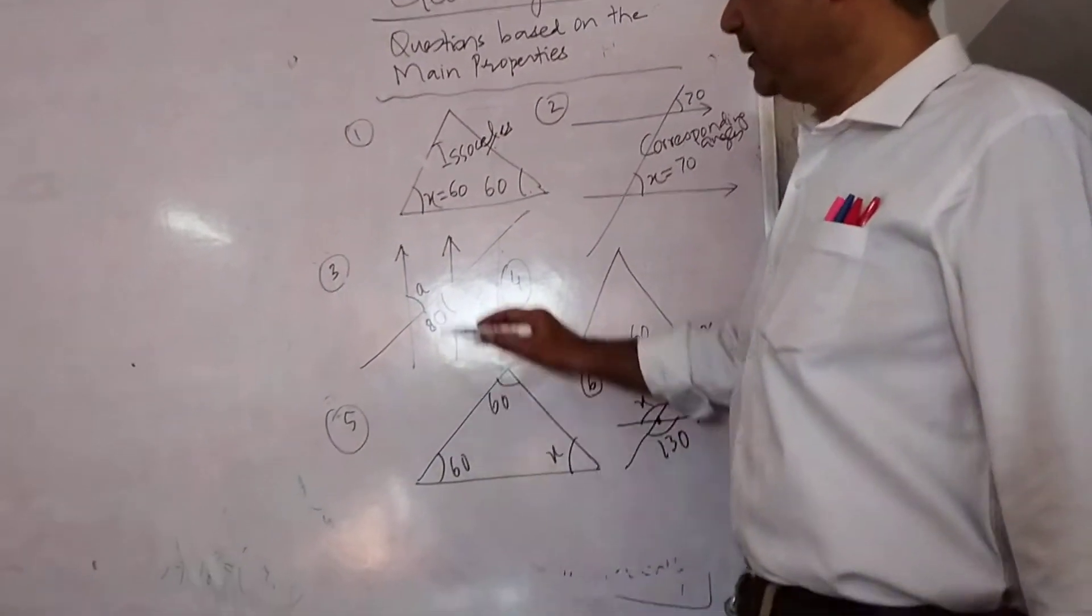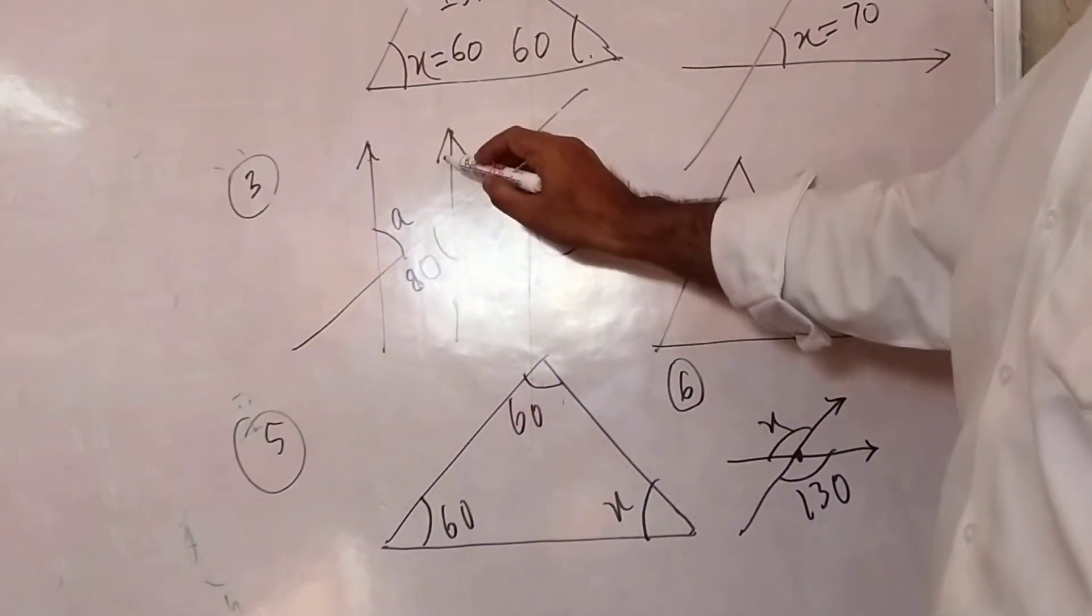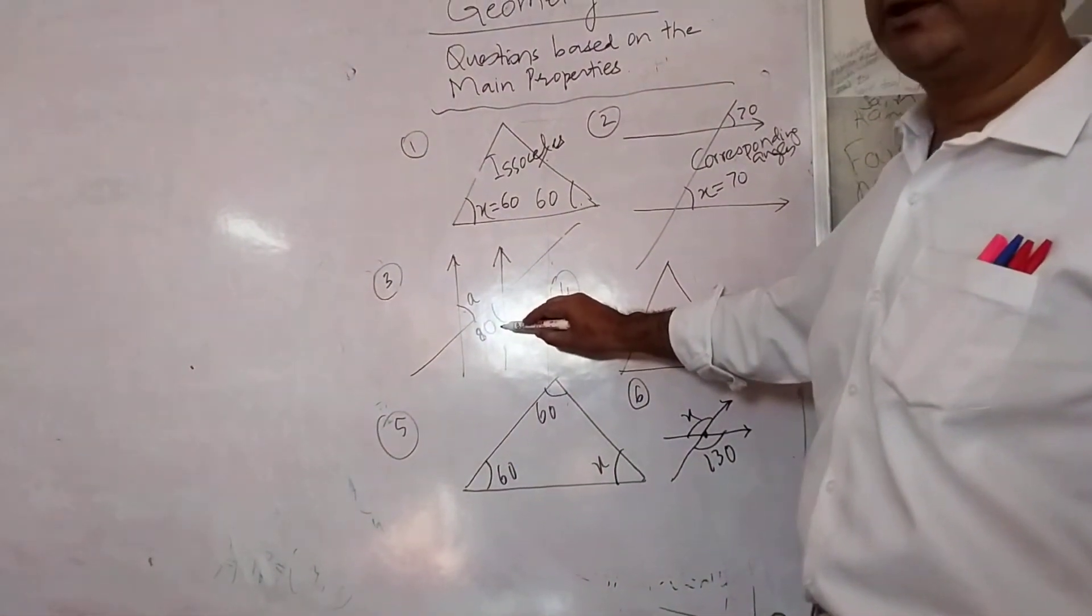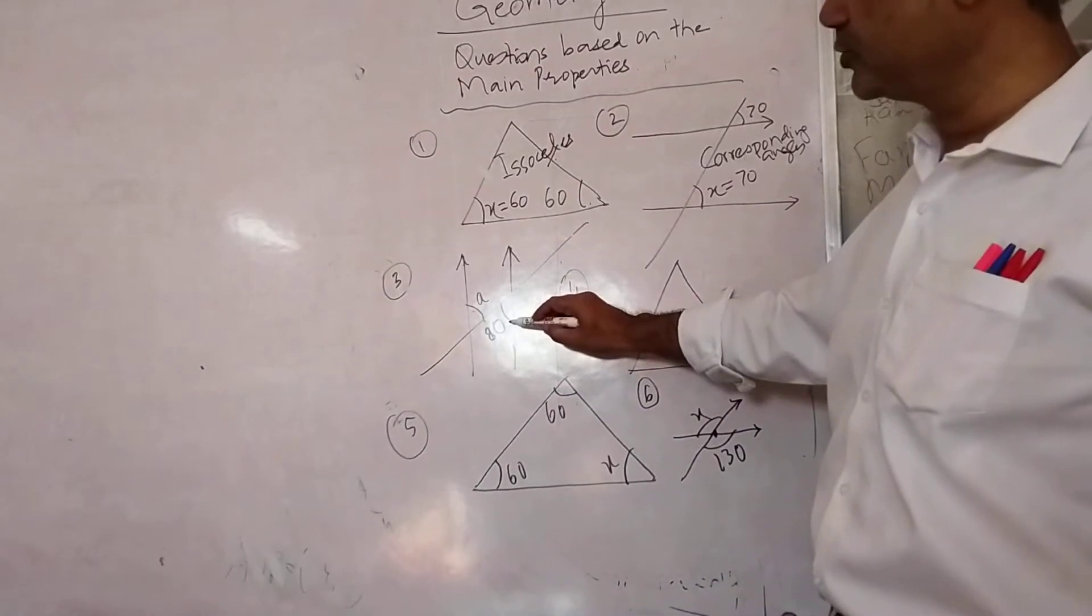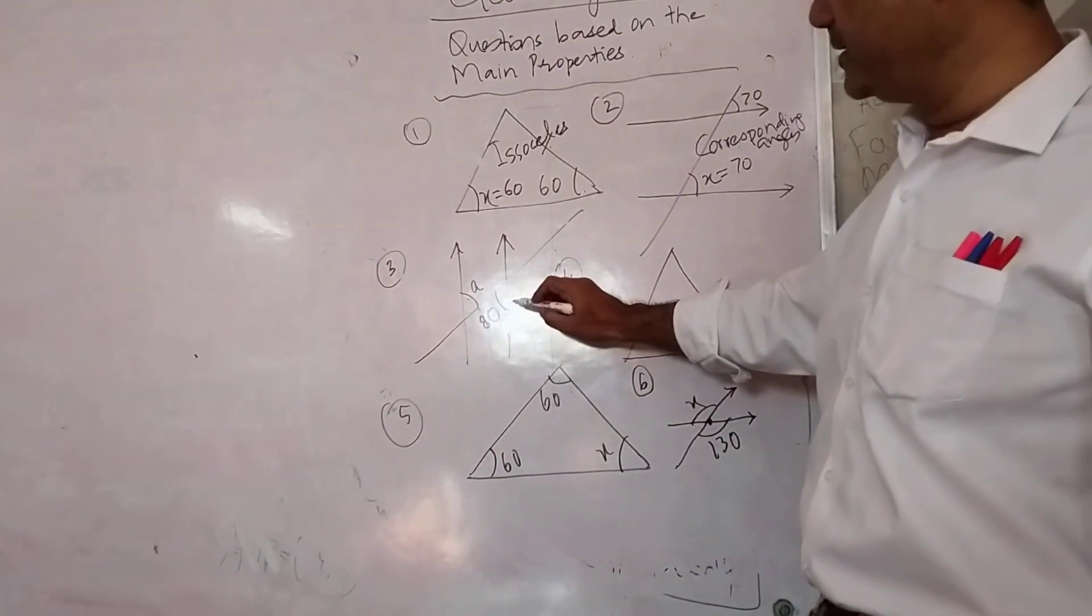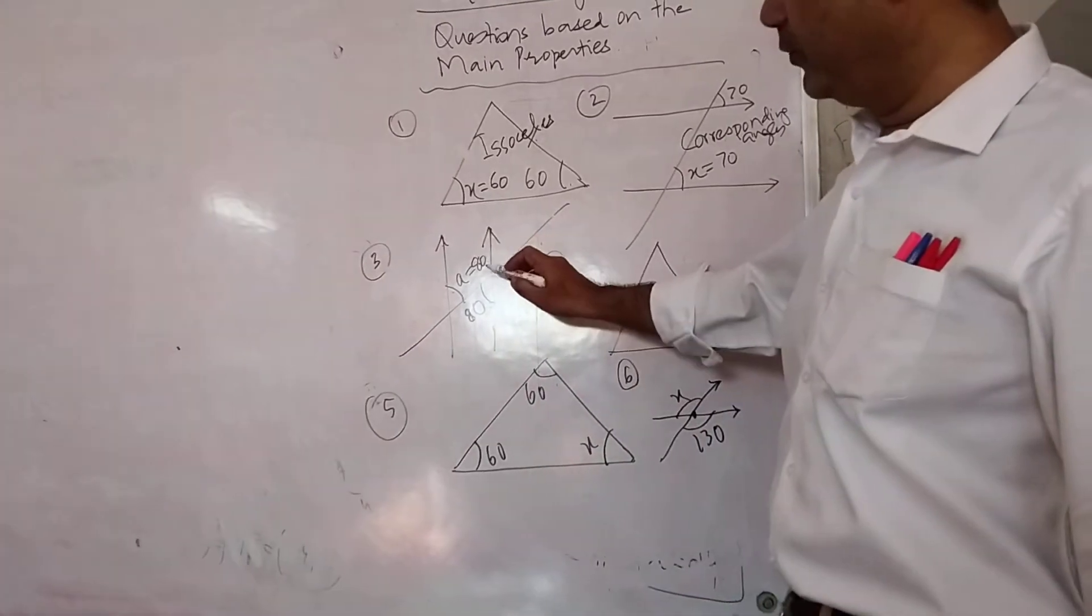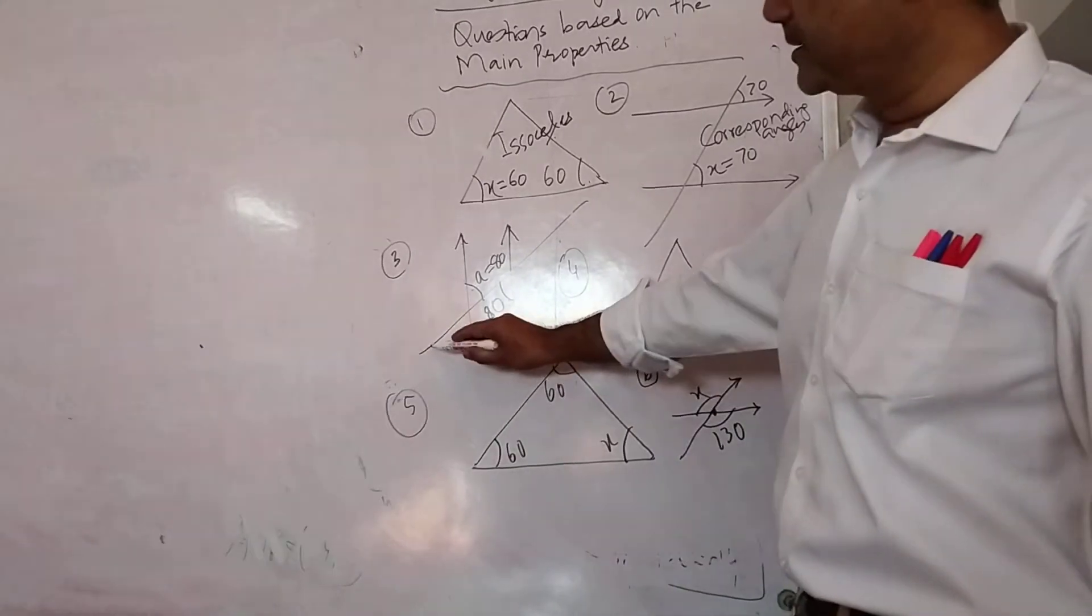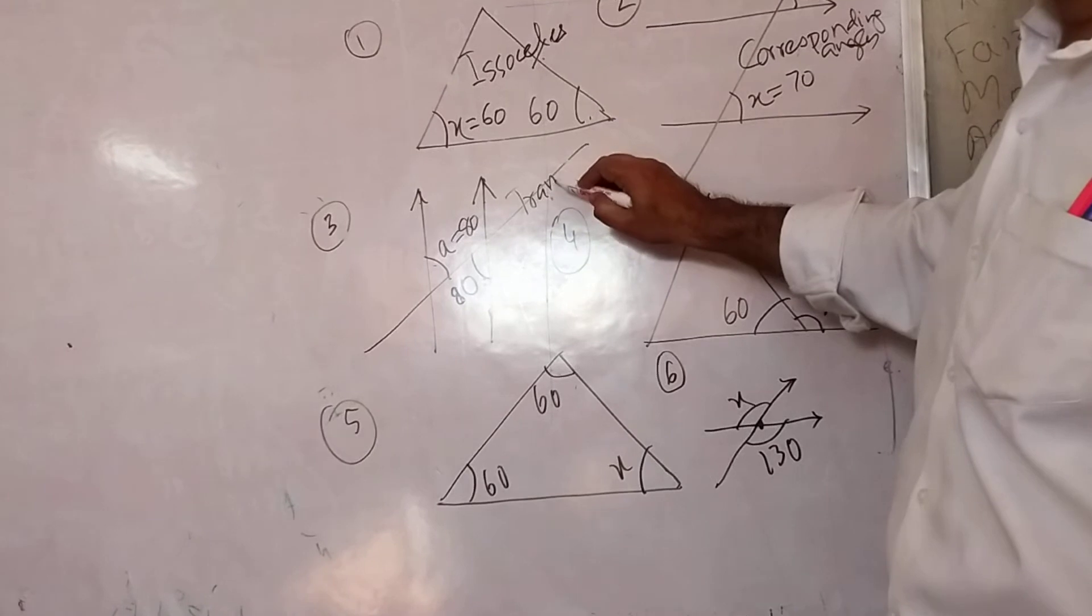What are these? Number 3. They are pointed parallel lines. They are made on the alternative sides, so they are alternate angles. They are also equal. A is equal to 80. But what is the requirement? That the line should be parallel. And this line which cuts over here, it is known as the transversal.